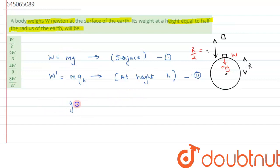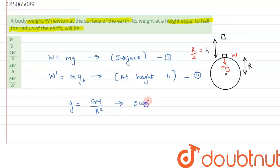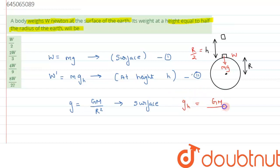We know g = GM/R² at the surface of the earth — that is the value of acceleration due to gravity at the surface. Similarly, g_h, the acceleration due to gravity at height h, can be written as GM/(R + h)².